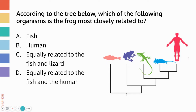Hopefully you came to the not-intuitive but correct answer, which is B — human. The frog is most closely related to the human out of all of these answer choices. Technically, the frog is equally related to the lizard, the mouse, and the human, because all of those organisms shared a common ancestor with the frog.